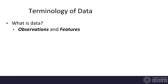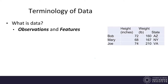Let's talk about terminology for data. Data consists of observations and features. For example, we have three people — Bob, Mary, and Joe — and we've measured their height, weight, and the state they came from. An observation refers to the measurements for one individual, so Bob's height, weight, and state is one observation. Features refer to the different variables: height is a feature variable, weight is another, and state is another.